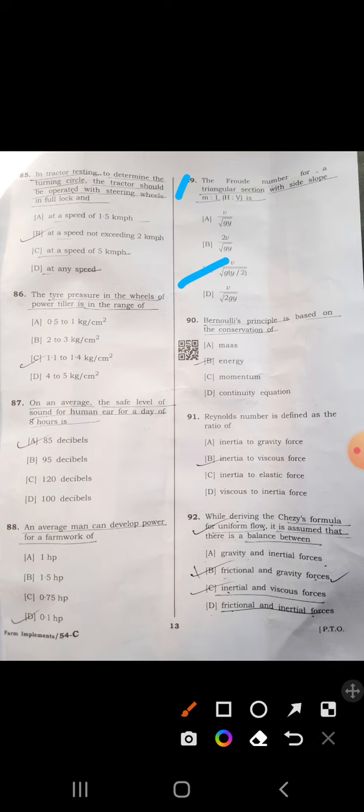Ninety-first: Reynolds number is defined as the ratio of inertia to viscous force. Ninety-second: while deriving the Chezy formula for uniform flow, it is assumed that there is balance between frictional and gravity forces. B is correct.